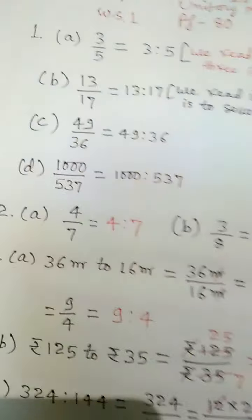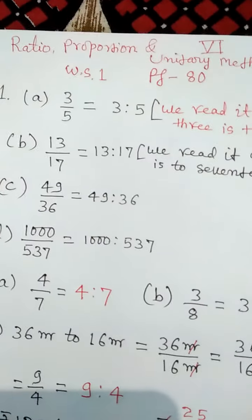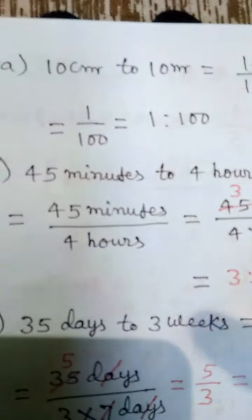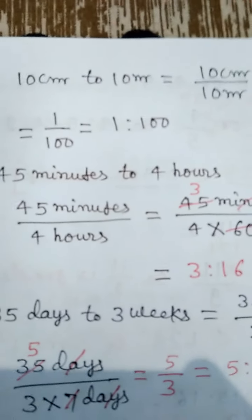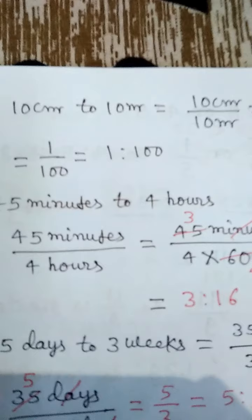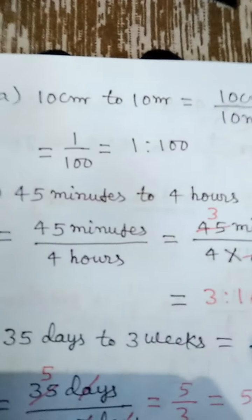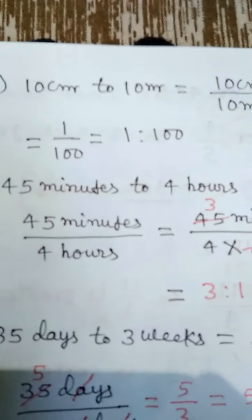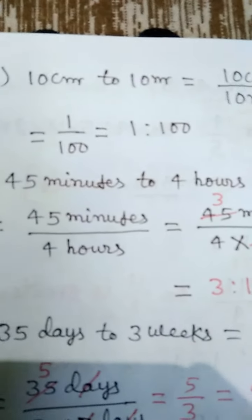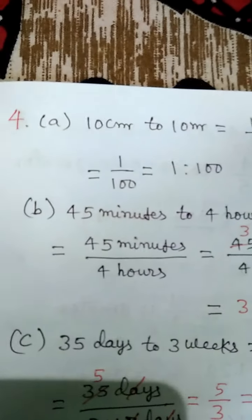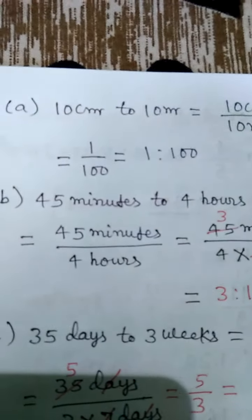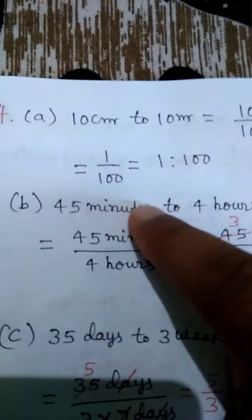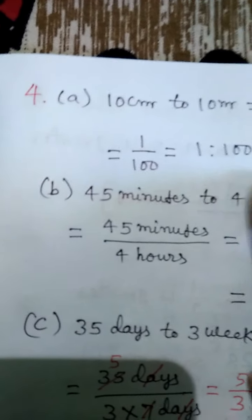When different units are given, we have to convert them into the same unit. For example, 10 cm to 10 meter — we need to write this in the form of Ratio. For this, we change meters into centimeters so both terms are in the same unit. Finally, we get 1 is to 100, which is the Ratio.